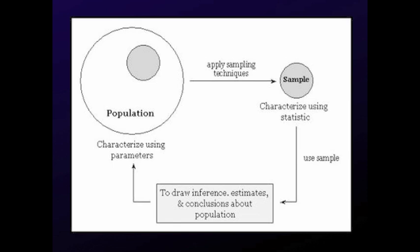If we could just get the whole population, we wouldn't need all the statistics we're going through. You could just describe the population and say here's what's happening. However, because we generally can't do that, we have to use a sample, and then all this complicated stuff — inferential statistics — is basically how you make claims about populations when all you can look at is samples.